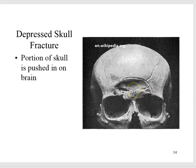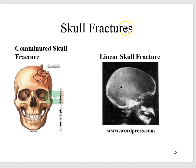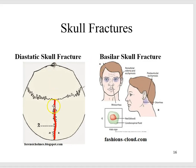A depressed skull fracture is where a portion of the skull is pushed in on the brain. A comminuted skull fracture is where a portion of the skull is splintered or crushed into pieces. A linear skull fracture has a break in the bone but the bone isn't moved. A diastatic skull fracture occurs along the suture lines in the skull. A basilar skull fracture — patients have periorbital edema and ecchymosis, giving them raccoon eyes, as well as otorrhea and postauricular ecchymosis behind the ear, called Battle's sign. This is the most serious type of skull fracture.